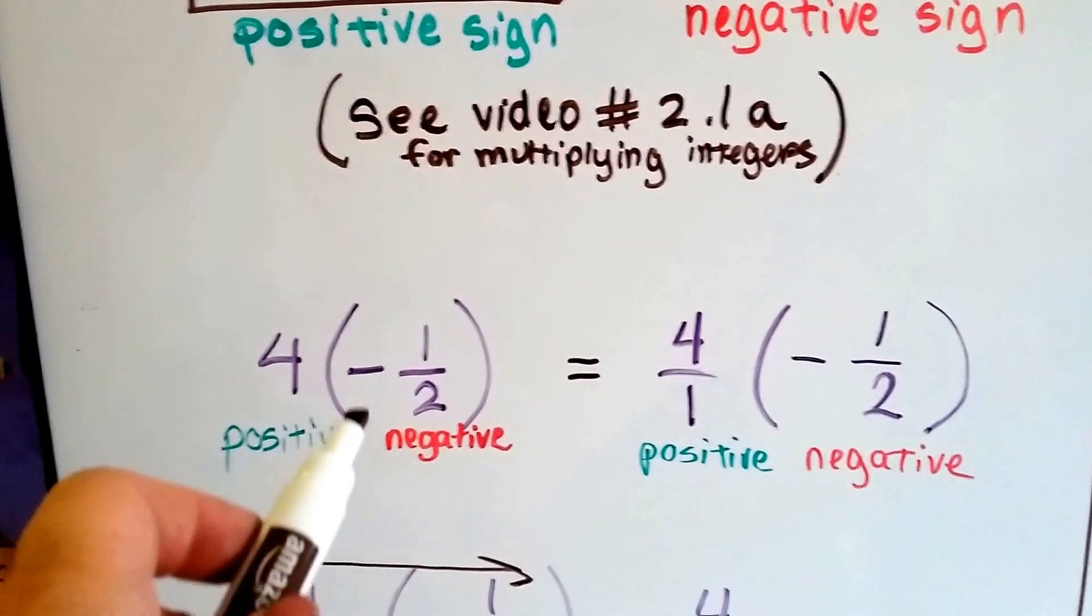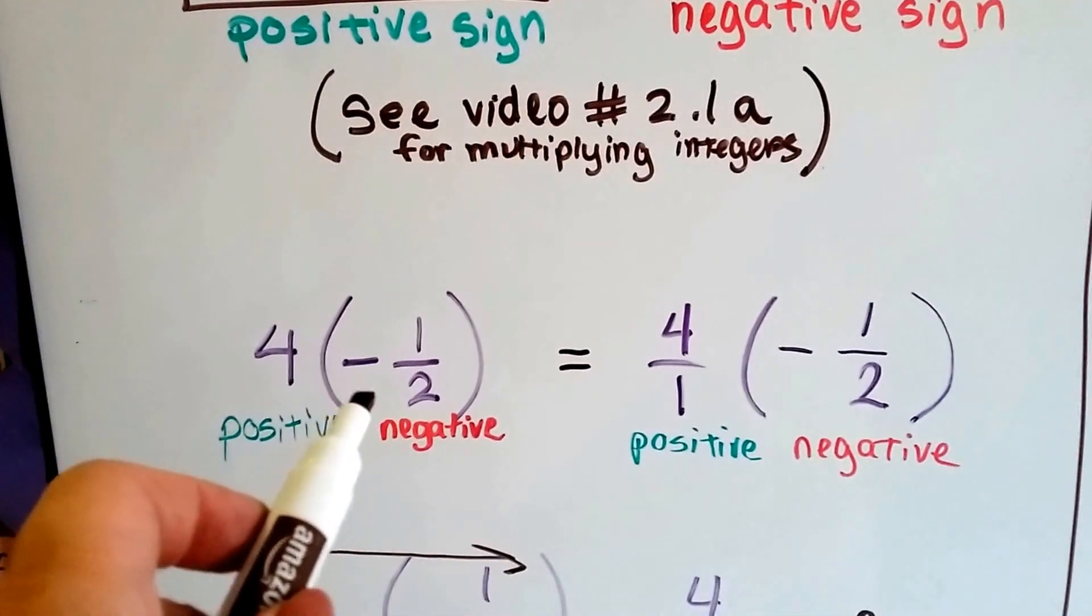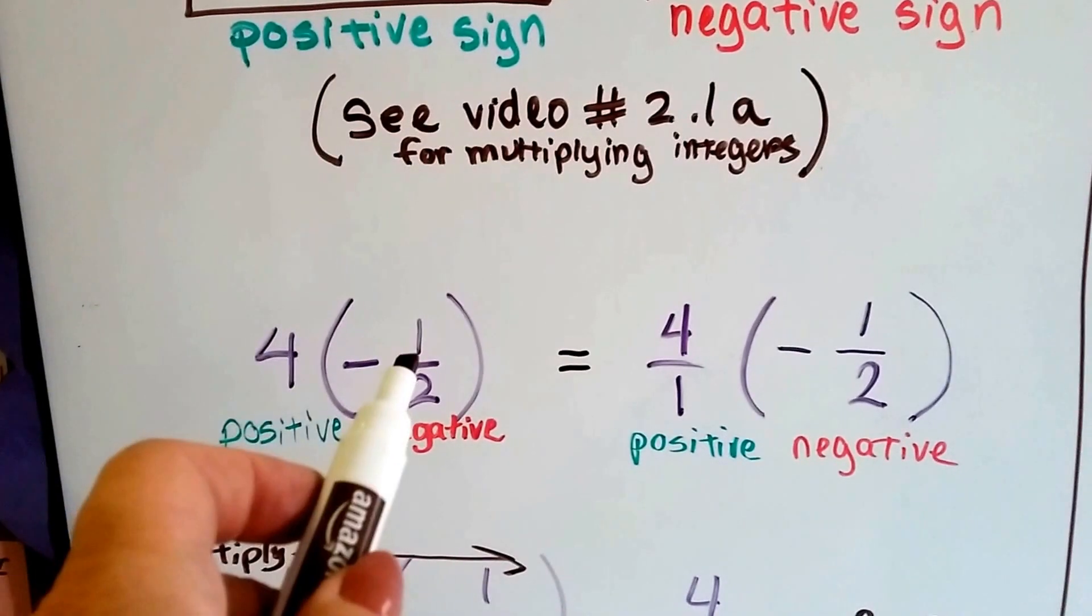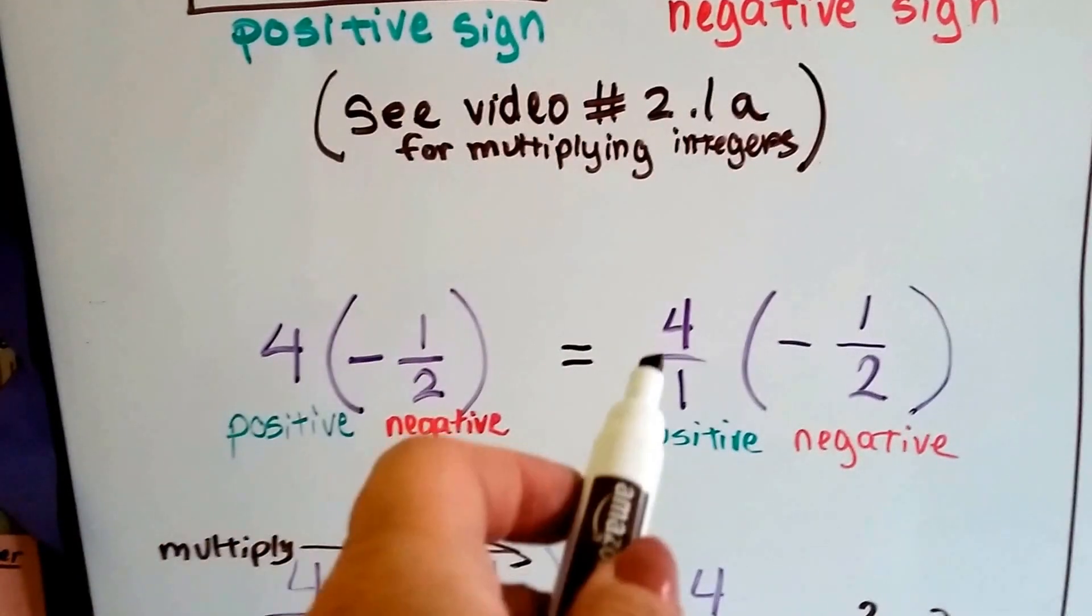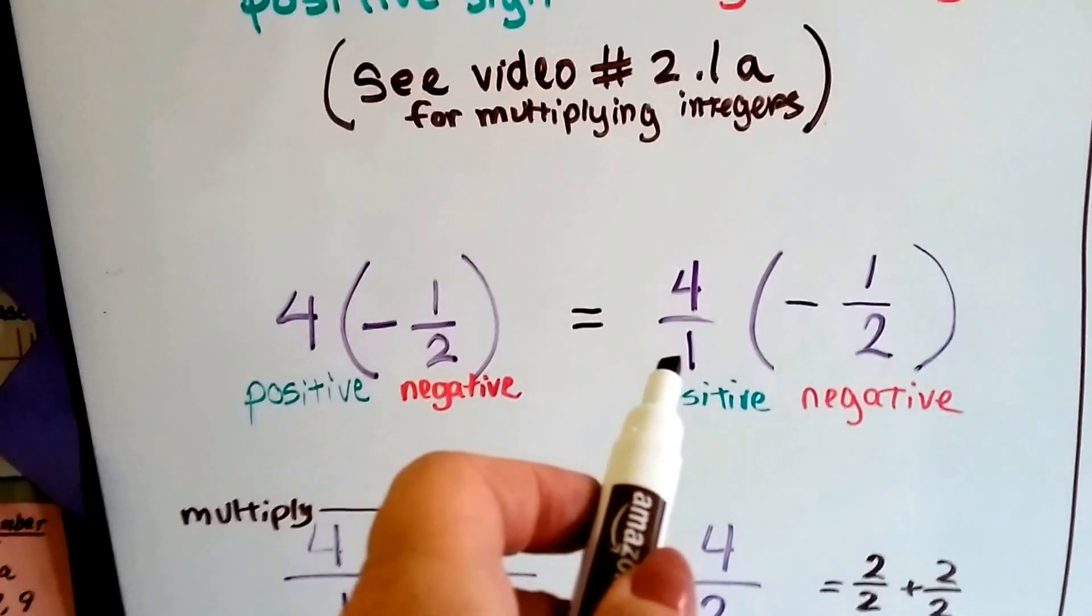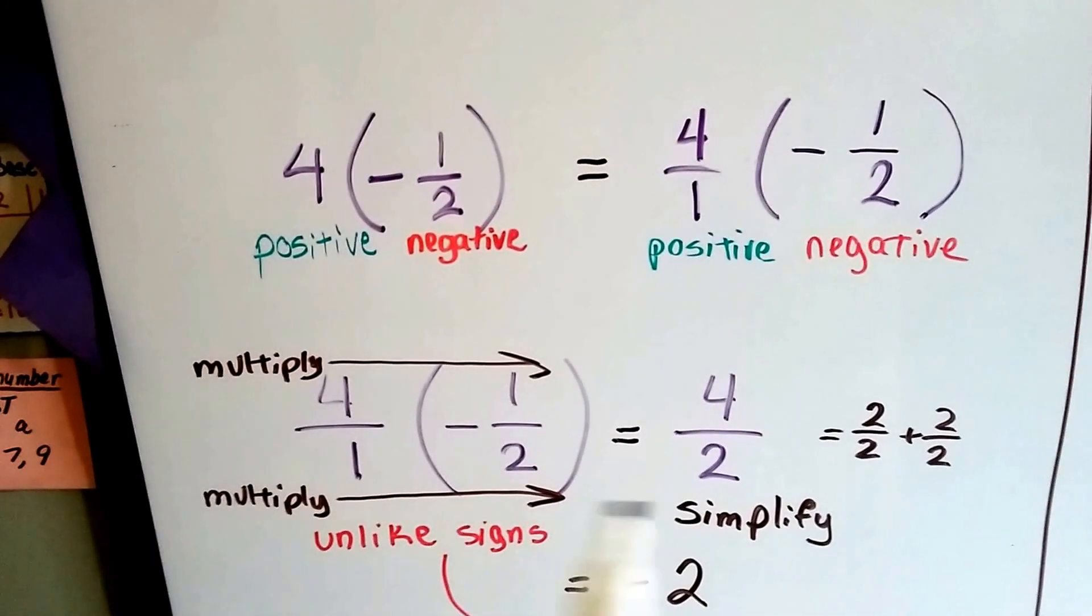We've got a positive 4 that we're multiplying by a negative half. When we multiply a whole number with a fraction, we turn the whole number into an improper fraction by putting a bar and a 1 underneath it. So now we can just multiply straight across, can't we?